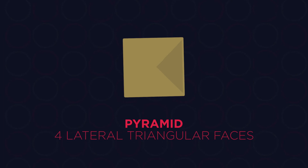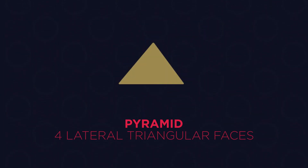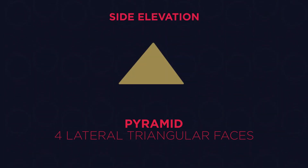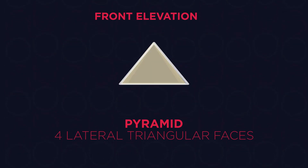When we rotate the pyramid to its side view, we see a triangle — this is its side elevation. And since it's made up of 4 identical triangular faces, this is also its front elevation.